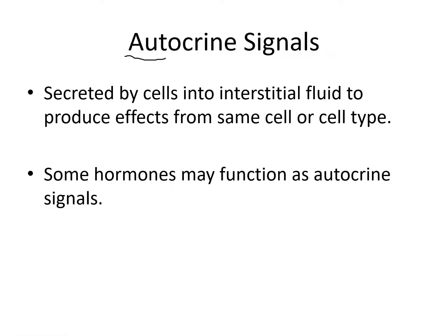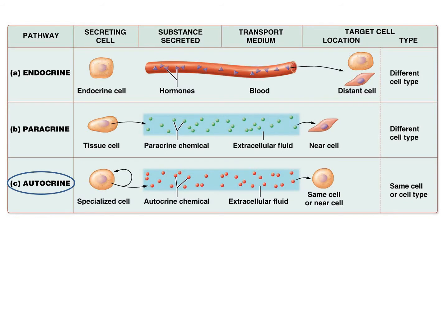We also have autocrine signals. Auto means self, so instead of affecting nearby different cells, these affect cells of the same type or the same cell itself. Hormones can also act as autocrine signals. So to summarize, hormones can act through the classical endocrine pathway, through paracrine pathways, or through autocrine pathways. Make sure you know the differences between the three.